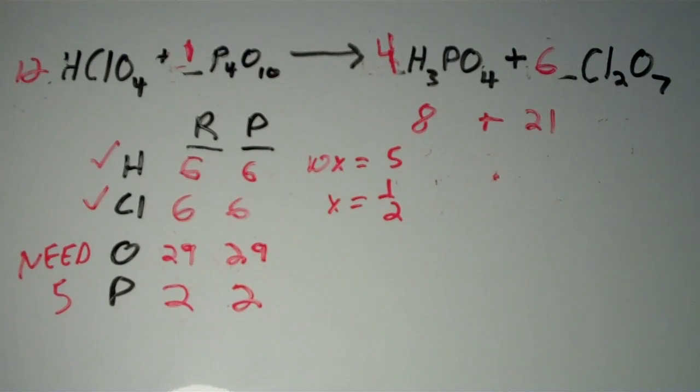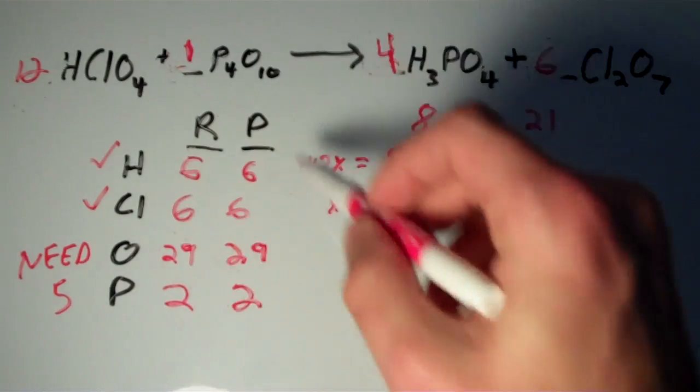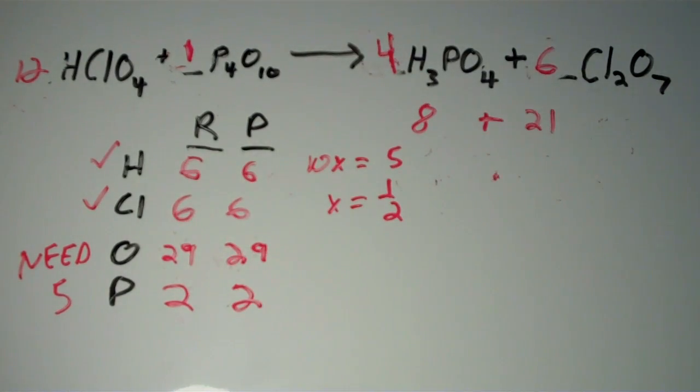So there you have it. There is our balanced chemical equation. And if you want to get the number of each type of atom, you simply multiply everything in this table by two. So I hope this video was helpful and good luck.